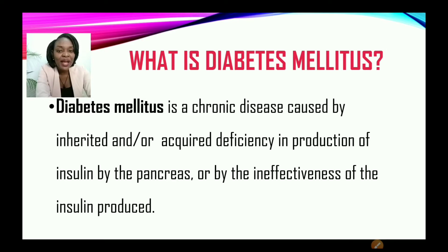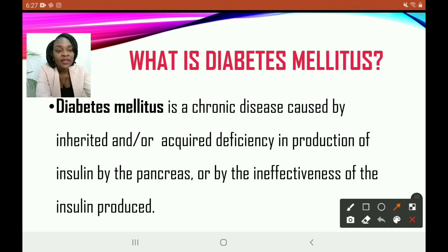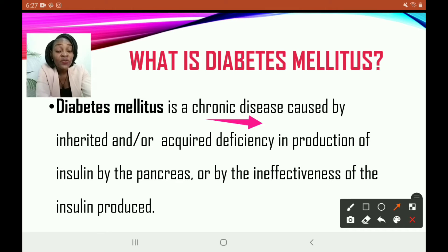Now, let us go back and take it a little bit slower. So diabetes is a chronic disease. What do we mean by chronic? Chronic diseases are those that take a while to discover and they last for a while — we're talking about months into years, to the end of your life. These illnesses or diseases stay with persons most of the time, or persons live with them for years.